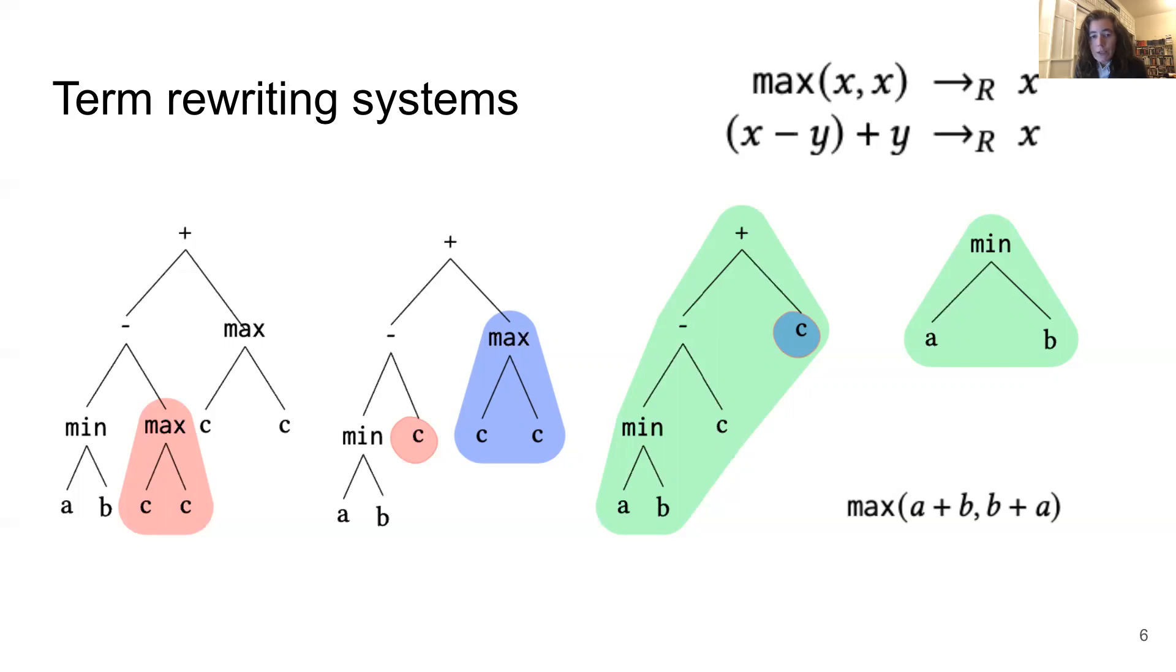Here we have an illustration of how these two rules can transform an expression. The key idea is that rewrite rules are just a list of ways we're allowed to manipulate symbols. They're purely syntactic, and they don't know anything about the semantics of the operations other than what is actually stated in the rules. For example, this term rewriting system doesn't know that addition is commutative. So this max expression on the lower right won't be simplified any further, because our system doesn't know that a + b and b + a are actually the same thing.